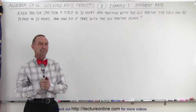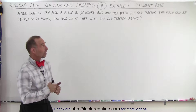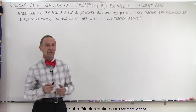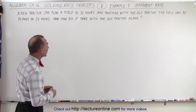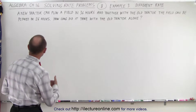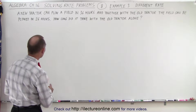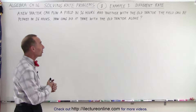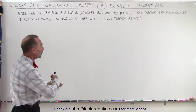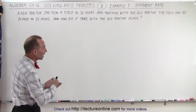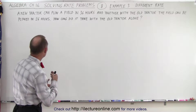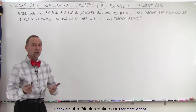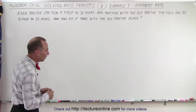Welcome to our lecture online. Now let's try an example problem with a different rate for each of the two. In this case we're dealing with tractors. A new tractor can plow the field in 36 hours. When we use the new and the old tractor together, the field can be plowed in 26 hours. So how long did it take with the old tractor all by itself?